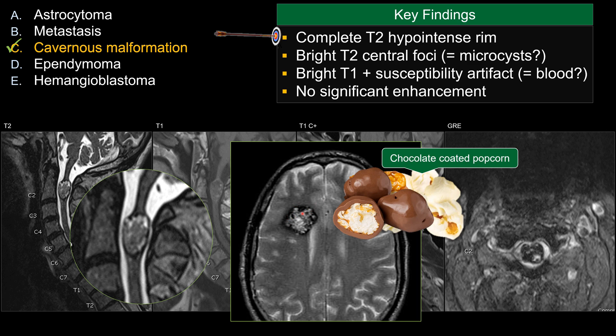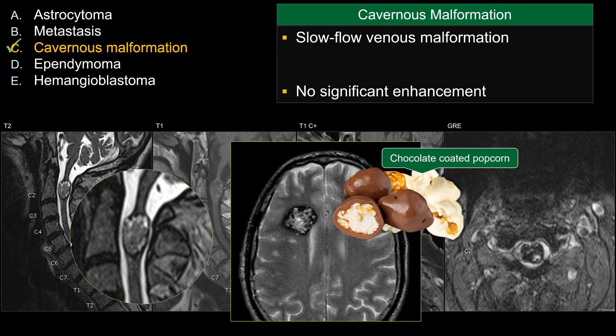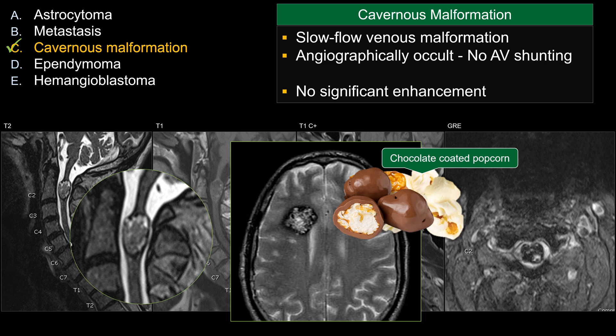That classic appearance in the brain has a very similar appearance in the spinal cord, consistent with cavernous malformation. Cavernous malformation is a slow-flow venous malformation; therefore there is no AV shunting. So on angiogram, you won't see it — or at least not clearly — because there's no AV shunting. Another older term for this lesion is angiographically occult vascular malformation.